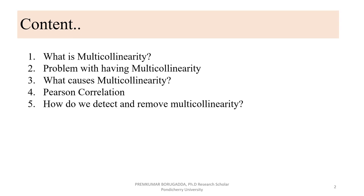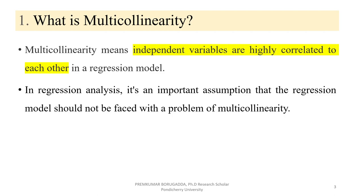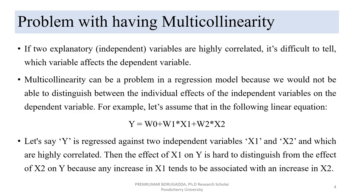What is multicollinearity? Multicollinearity means independent variables are highly correlated with each other in a regression model. In regression analysis, it is an important assumption that the regression model should not face the problem of multicollinearity. The problem with having multicollinearity is that if two independent variables are highly correlated, it's difficult to tell which variable affects the dependent variable.